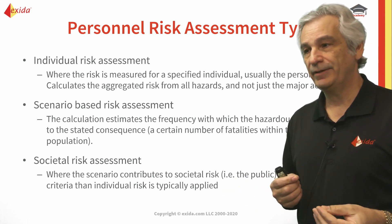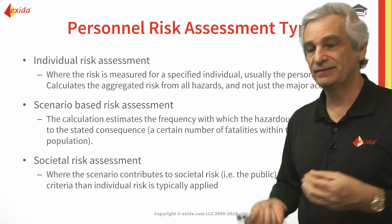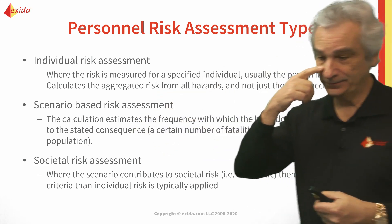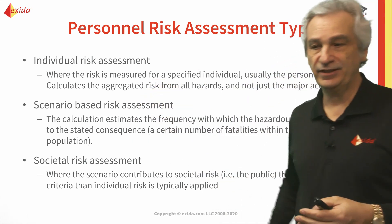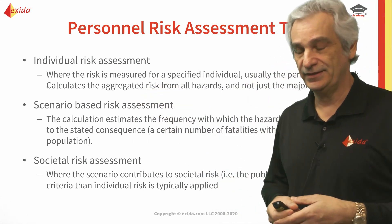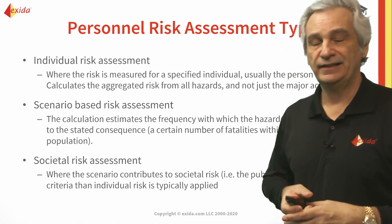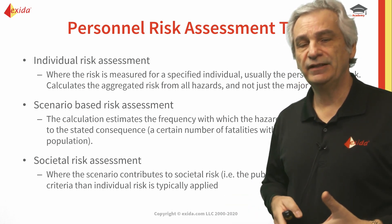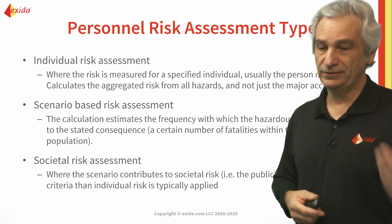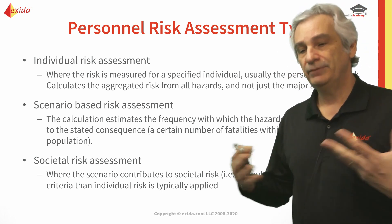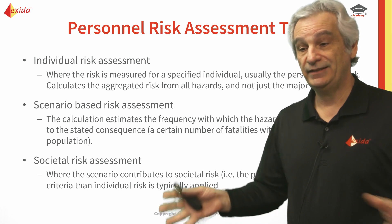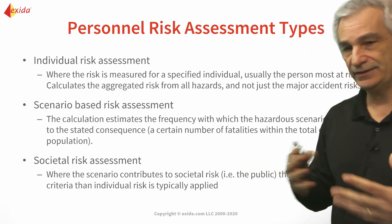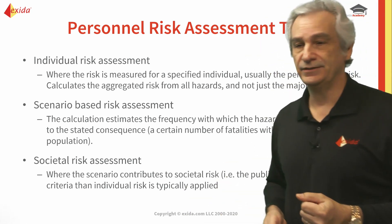There are two types of exposure: random and planned. Random would be when an operator at the panel sees a problem with a field device and radios someone to go check it in the field. Planned is when we're doing maintenance — an annual or biannual shutdown — where we need people in a hazardous area and must consider how many people need to be there. These things need to be considered as part of the design process.